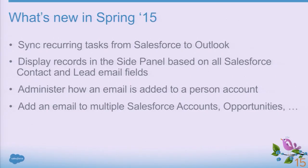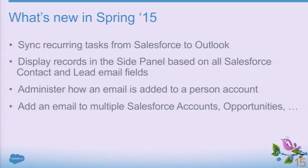Now let me talk about what we're bringing to market in Spring 15. We've been working on four new major features. The first is to synchronize recurring tasks one direction from Salesforce to Outlook. The second is around the records we're displaying in the side panel and how we use email addresses to match against Salesforce contacts and leads. The third is about how emails get added to person accounts. The last one is around adding an email to multiple Salesforce accounts, opportunities, or cases.